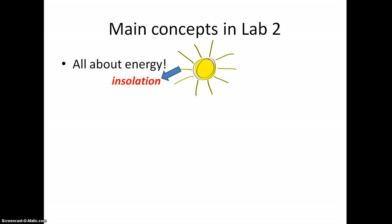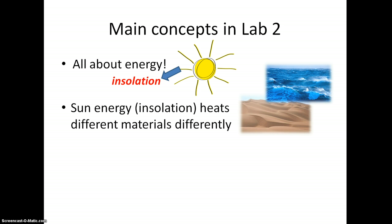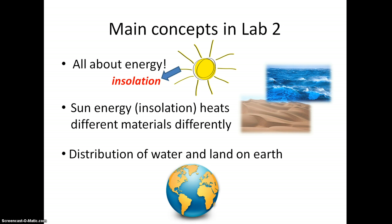One of the key concepts in this lab is that different materials respond to sun energy differently. Land heats and cools much more quickly than water when exposed to the same amount of insolation. Another key factor in the Earth's temperature patterns is the distribution of land and water on Earth. When you look at a globe, notice that the land in the northern hemisphere is bunched up pretty far north, while most of the land in the southern hemisphere is in the tropics. We will consider how that affects the Earth's temperature patterns.